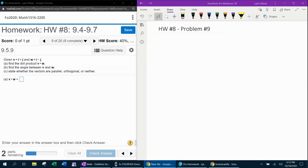All right, here we go. Question number nine from our 1316 homework number eight in MyLabMath. It says given vectors v and w, part a, find the dot product. So what I want you to know is that when it says dot product, that means take your vectors and stack them.